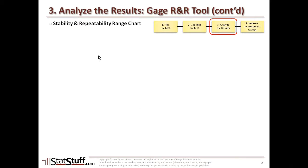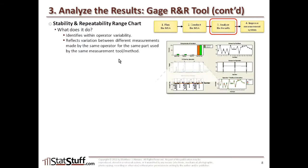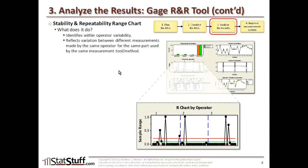Let's start with the stability and repeatability range chart. This chart identifies within-operator variability — it reflects the variation seen between different measurements made by the same operator for the same part using the same measurement tool or method.